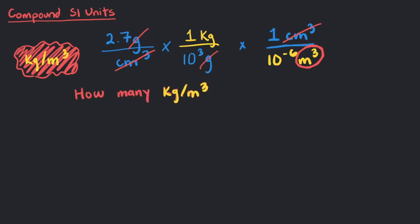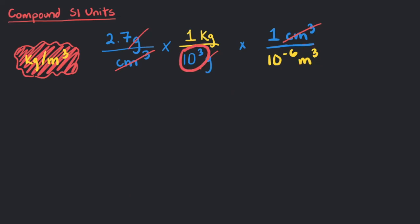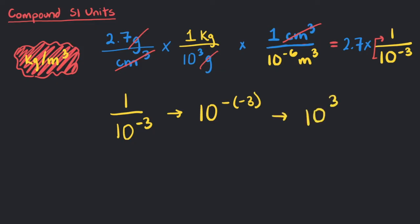Finally, how many kilograms per cubic meters is 2.7 grams per cubic centimeters? Yes, 2.7 grams per cubic centimeter equals 2,700 kilograms per cubic meter. 10 to the 3 multiplied by 10 to the negative 6 is 10 to the negative 3 on the bottom. To bring 10 to the negative 3 to the numerator, we can use the inverse of this number by including a negative to the exponent. 1 over 10 to the negative 3 becomes 10 to the 3.